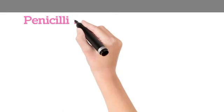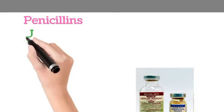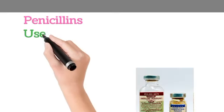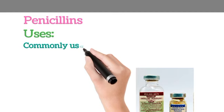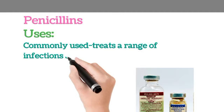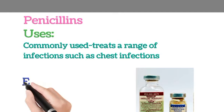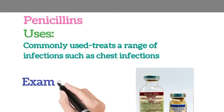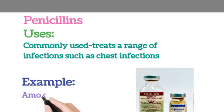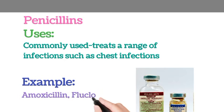Penicillins — uses. Penicillin is commonly used to treat a range of infections such as chest infections. Examples are amoxicillin and flucloxacillin.